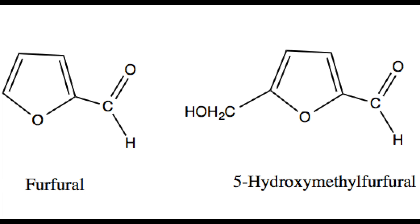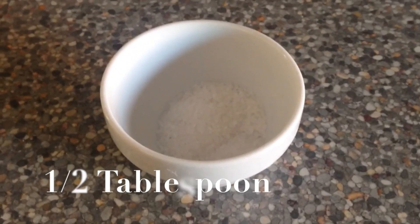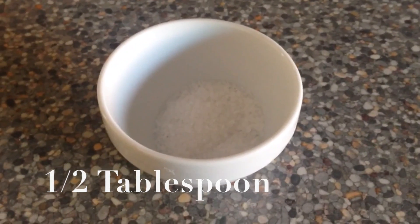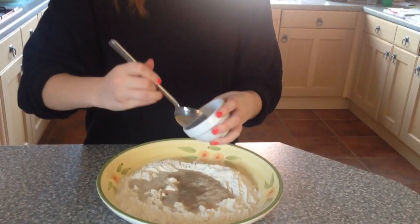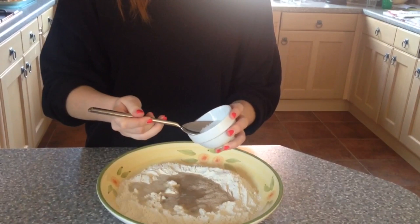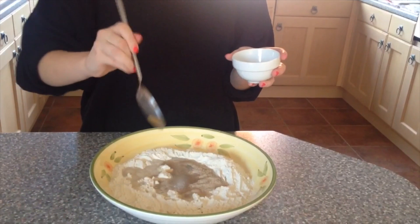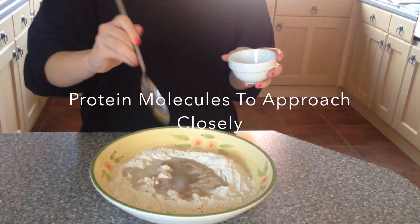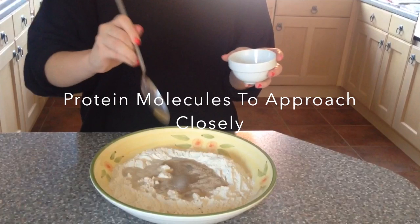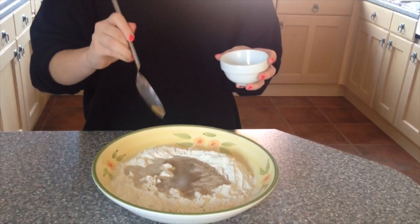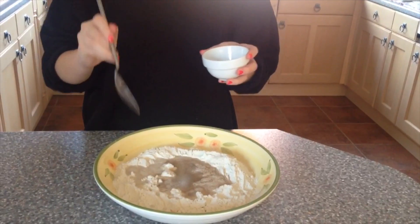These compounds include furfural and hydroxymethyl furfural. Finally, half a tablespoon of salt is added. Salt's ions shield gluten's charges from one another, whilst enabling the protein molecules to approach more closely, thus giving a stronger and stable dough.